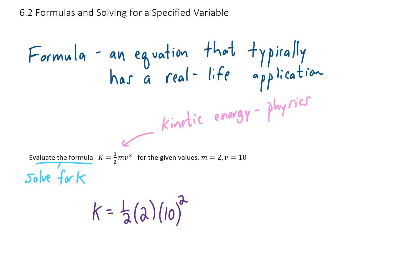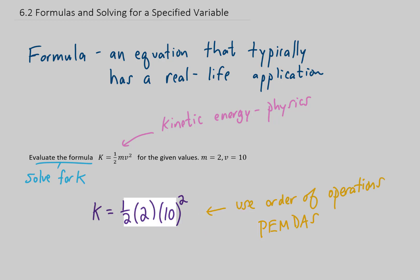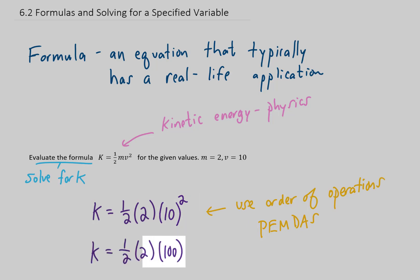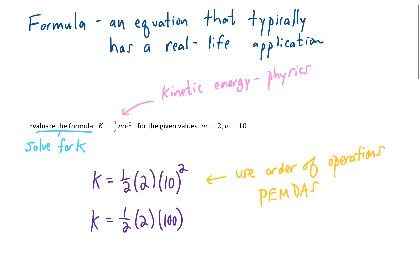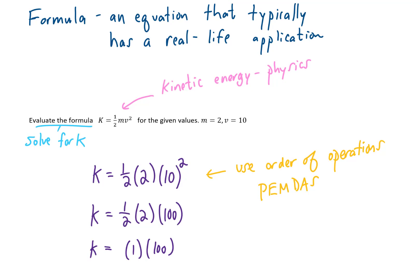When we substitute values into a formula, it's usually a good idea to keep parentheses around those values, in case there are negatives we have to deal with. Now we follow order of operations — PEMDAS. We start with parentheses, but there's nothing inside to simplify, so we move to exponents. We square 10 to get 100. Then we can multiply one-half times 2 to get 1, carry down the 100, and multiply to get k equals 100.